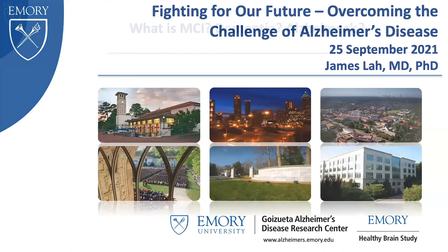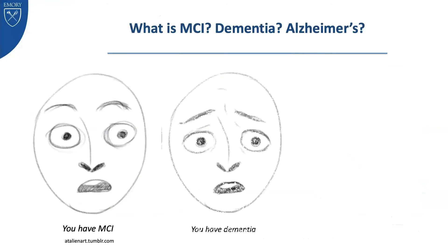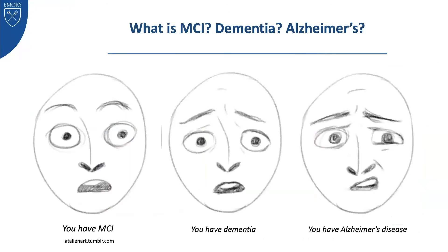First of all, I want to make sure that we're all on the same page. This is sort of how I envision what happens when I'm seeing patients in my clinic and I tell them different things. If I tell somebody that you have MCI or mild cognitive impairment, they're like, that doesn't sound so good. And then if we talk about somebody having dementia, that sounds really not so good. But then if I say the word Alzheimer's, all of a sudden the scare factor goes up astronomically. So I want to make sure we understand what we're talking about when we talk about these terms.